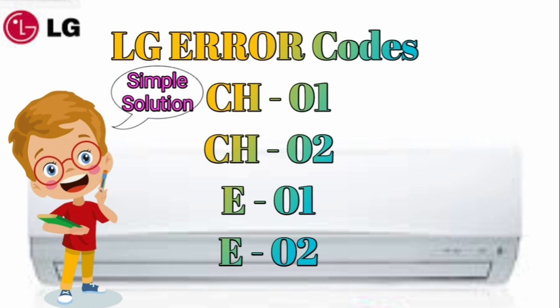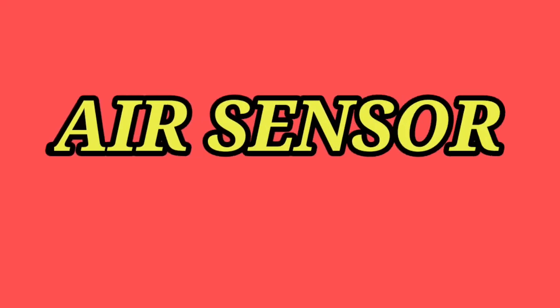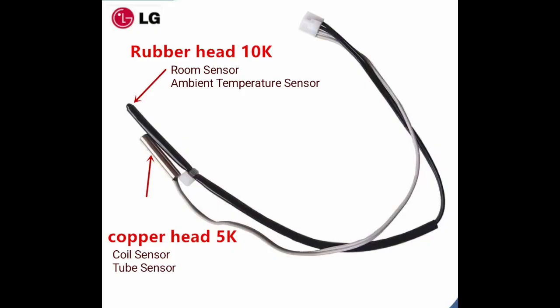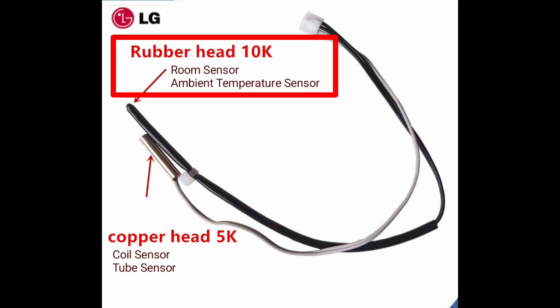First, we will discuss CH1 or E1. This error comes because of an air sensor problem. What is an air sensor? I'll show you — you can see this is the air sensor, the rubber head 10K room sensor, also called the ambient temperature sensor. We have two sensors in the coil.